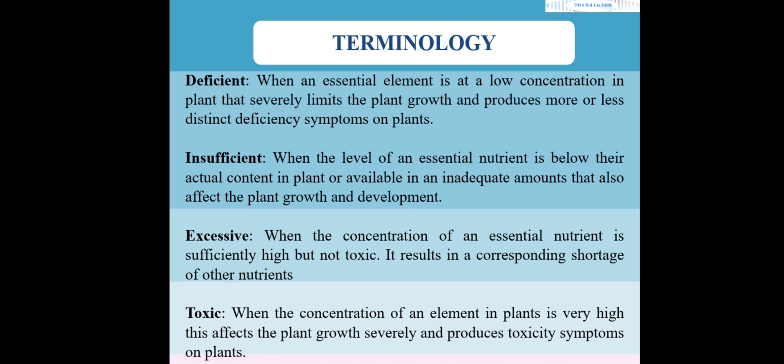Next is terminology. There are four terms used to describe the status of any essential nutrient in a plant. The first term is 'deficient' — when the concentration of any element is low in the plant, that severely limits plant growth and produces more or less distinct deficiency symptoms. We use the word 'deficient' when the deficiency of any essential element starts appearing on the leaves, stem, or any other part of the plant.